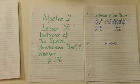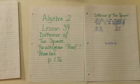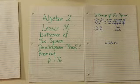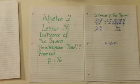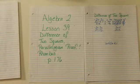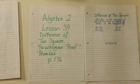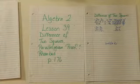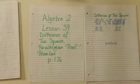Hi, this is Algebra 2, Lesson 39. We're going to talk about the difference of two squares, the parallelogram proof, and rhombuses. We're starting on page 176.